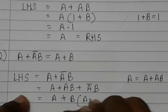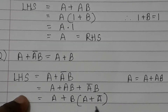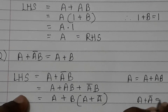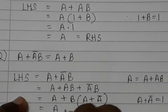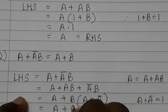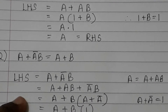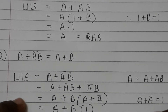A plus (A plus A-bar) into B. Now A plus A-bar equals 1, so we get A plus B into 1, which equals A plus B, equal to RHS. Hence proved.